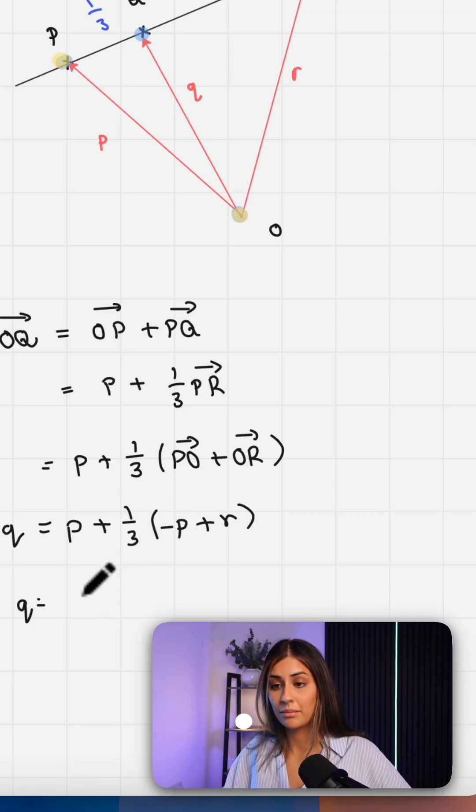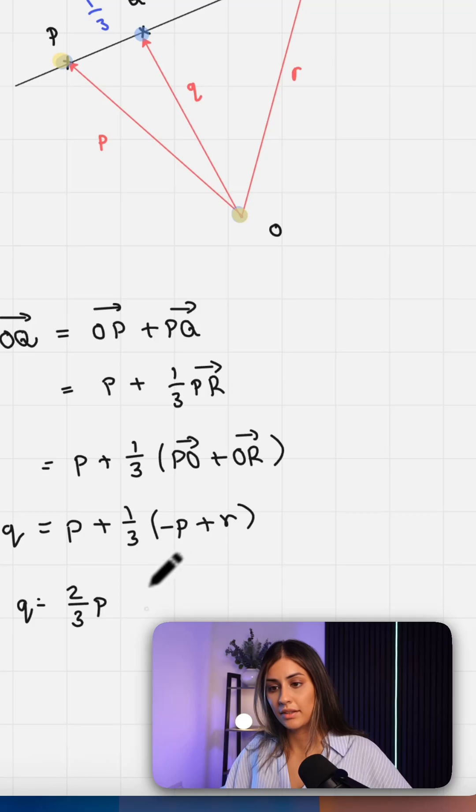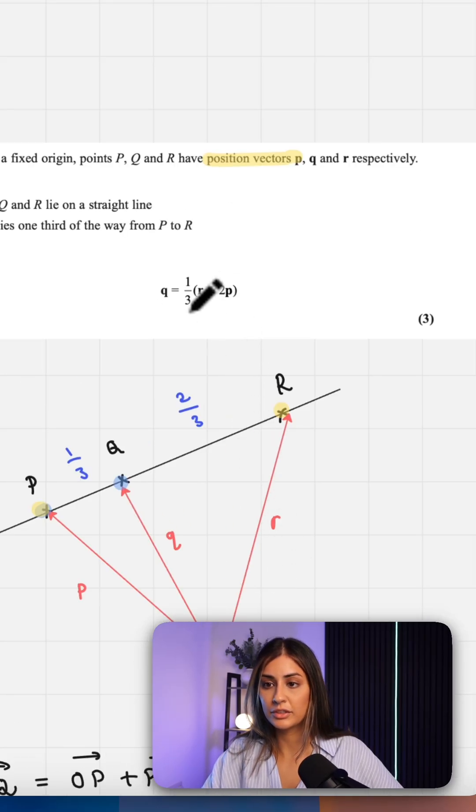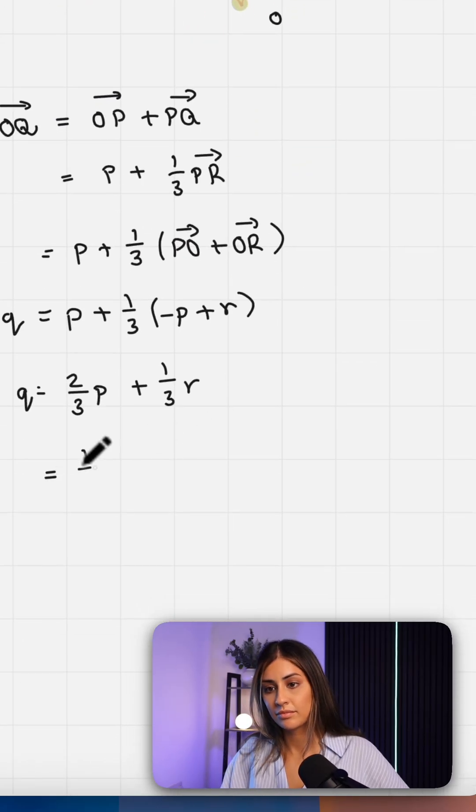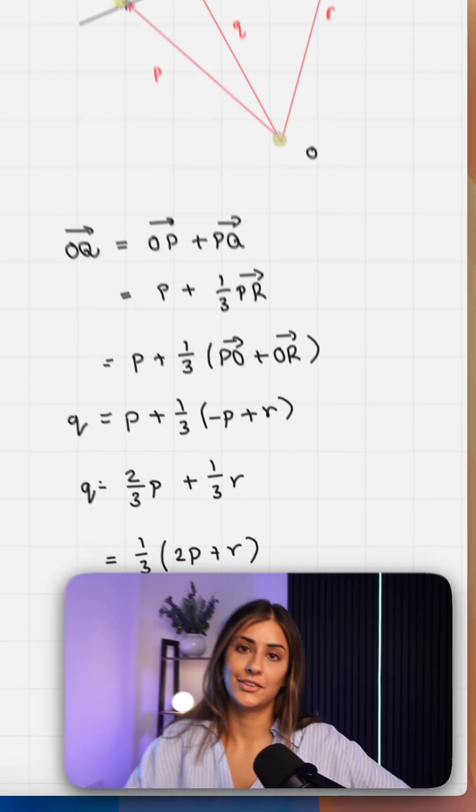So P minus a third P, two thirds P plus a third R. And then they've just pulled out a third. And that's your answer.